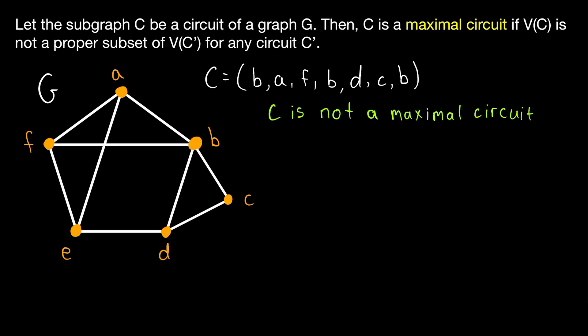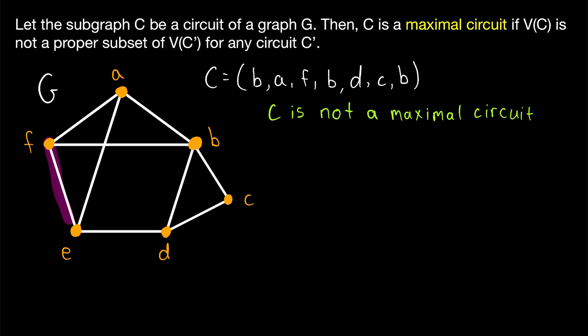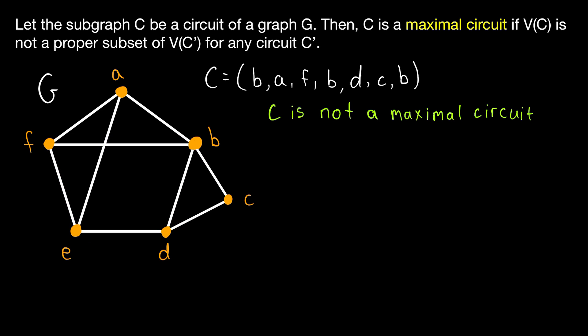Since this graph has a Hamilton cycle — a circuit containing all vertices of the graph — no circuit of this graph will be maximal unless it contains all vertices. For example, here's another circuit which also happens to be a cycle, but its vertex set is a proper subset of the Hamilton cycle, which contains all of its vertices and then some. So the Hamilton cycle is a maximal circuit: there's no circuit in the graph that contains all of those vertices and more, since it already contains all vertices of the graph.